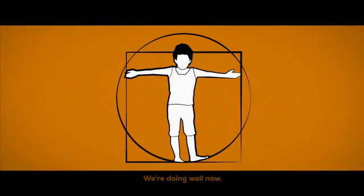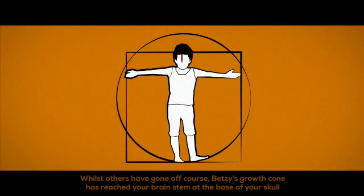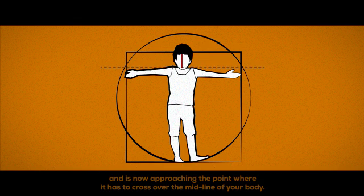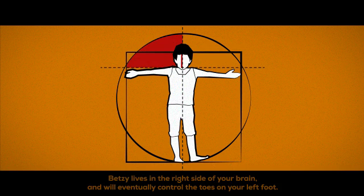We're doing well now. Whilst others have gone off course, Betsy's growth cone has reached your brain stem at the base of your skull and is now approaching the point where it has to cross over the midline of your body. Betsy lives in the right side of your brain and, therefore, will eventually control the toes on your left foot.